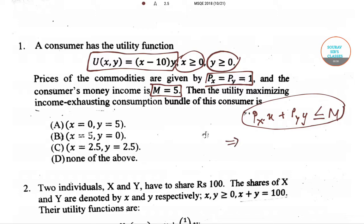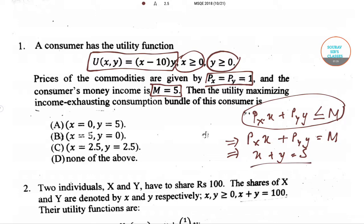When the budget constraint is binding, the budget equation can be written as px times x plus py times y equals m. Plugging in the values of px, py, and m provided in the question, we get x plus y equals 5. Now we need to maximize the utility function subject to this budget equation.